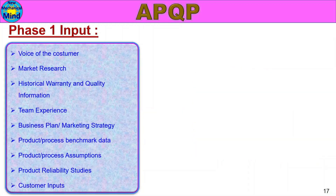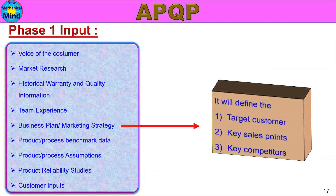Next, Business Plan or Marketing Strategy. It will define the target customer, key sales points, and key competitors. We will target a customer or a sales point and mention it. We will consider the business plan or marketing strategy as a key input.